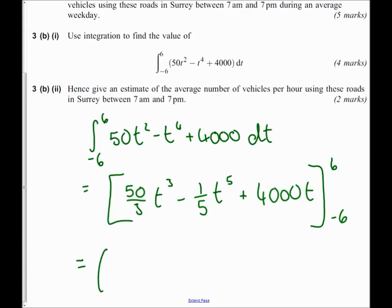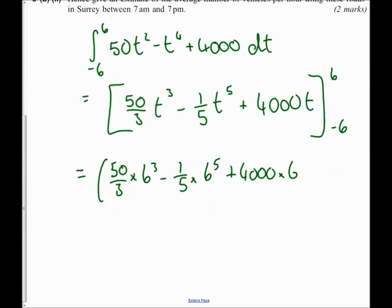Then I'm going to substitute in the 6 wherever there's a t. So I'm going to say 50/3 × 6³ - 1/5 × 6⁵ + 4000 × 6.